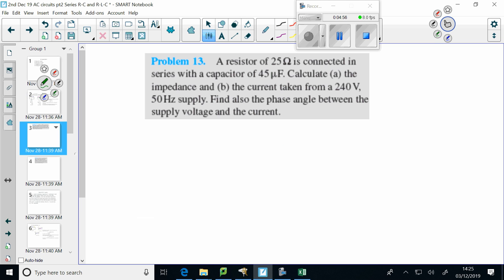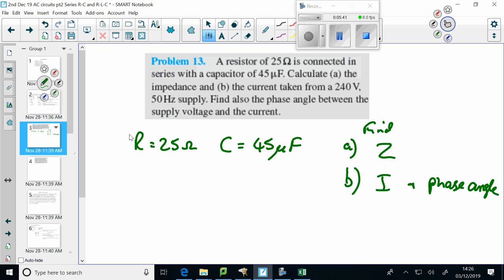So, problem. Resistor 25 ohms. Let's connect them in series with a capacitor, 45 microfarads. Calculate A, the impedance, so we want to find Z and B, the current. Plus, it's slightly diagonal between voltage and current. So, we'll do this one together.